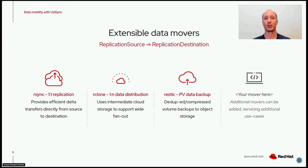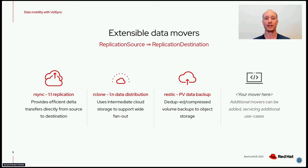VolSync's capabilities are built around the notion of data movers. At the highest level, VolSync defines sources and destinations for data movement via its replication source and replication destination custom resources. These CRs define common items such as which data to replicate and how often. Actual data transfer is handled by a set of data movers tailored to different uses: an RSync-based mover for one-to-one replication, an RClone-based mover for one-to-many data distribution, and the Rustic mover for simple backups of persistent data.